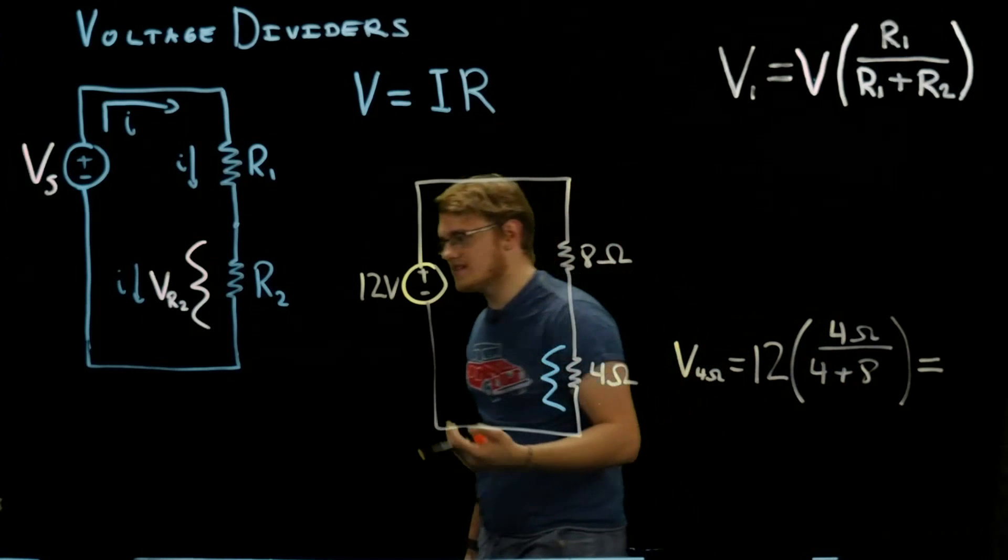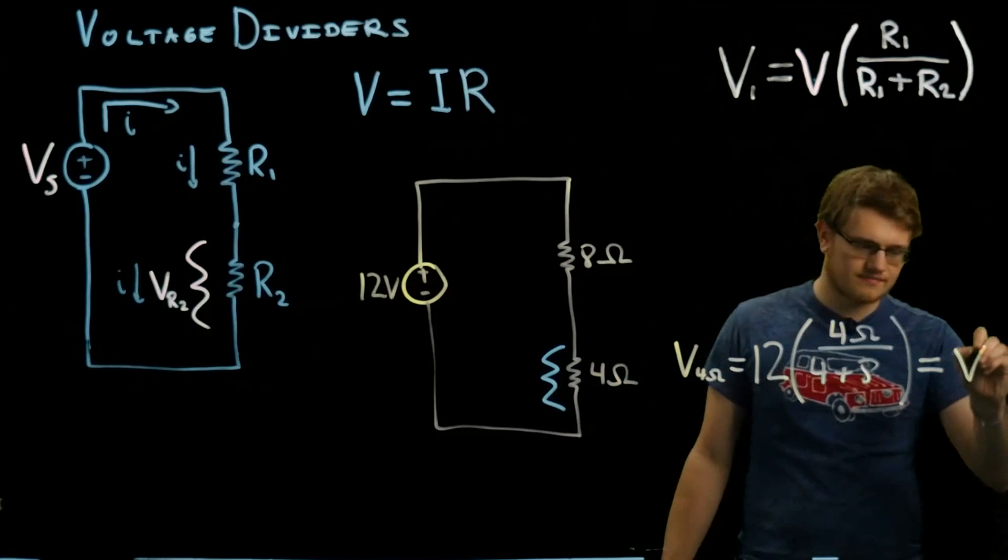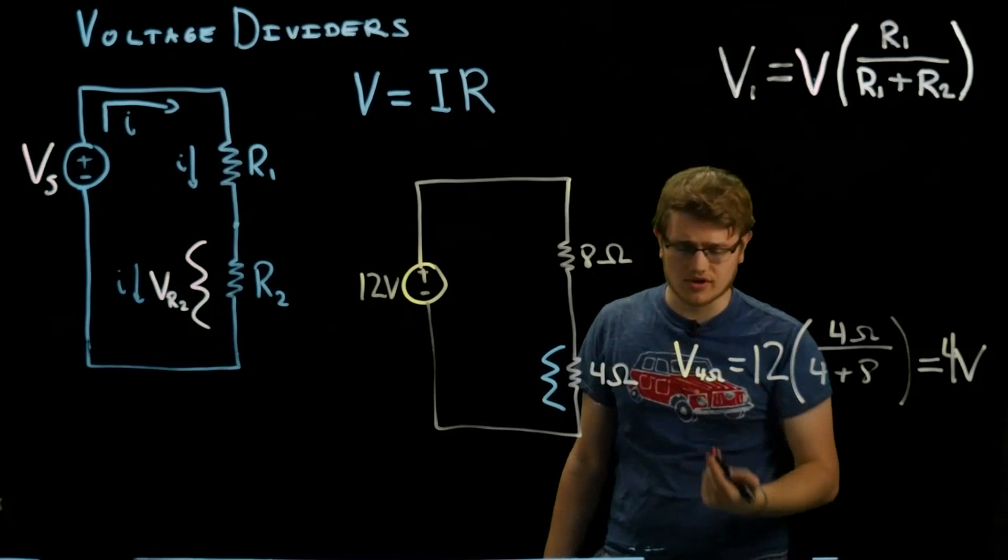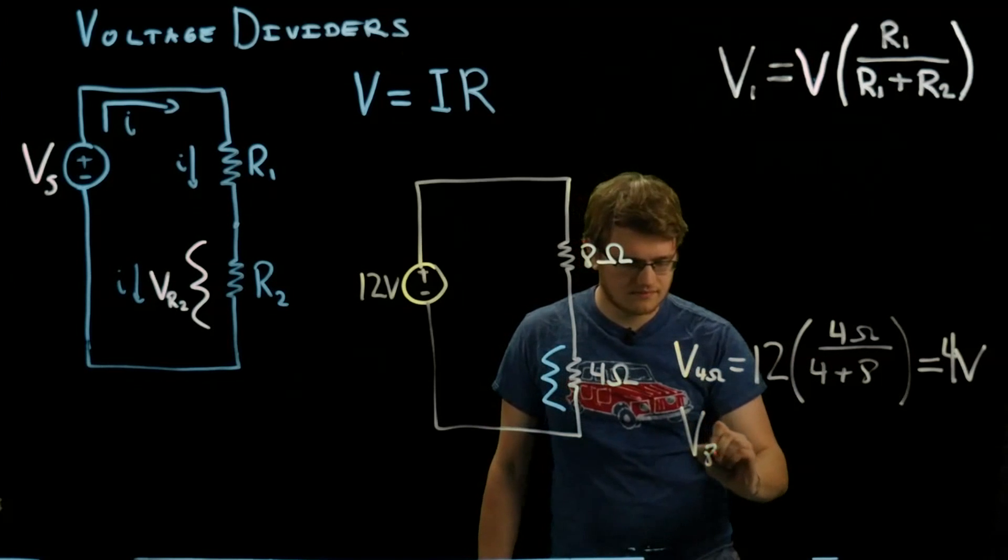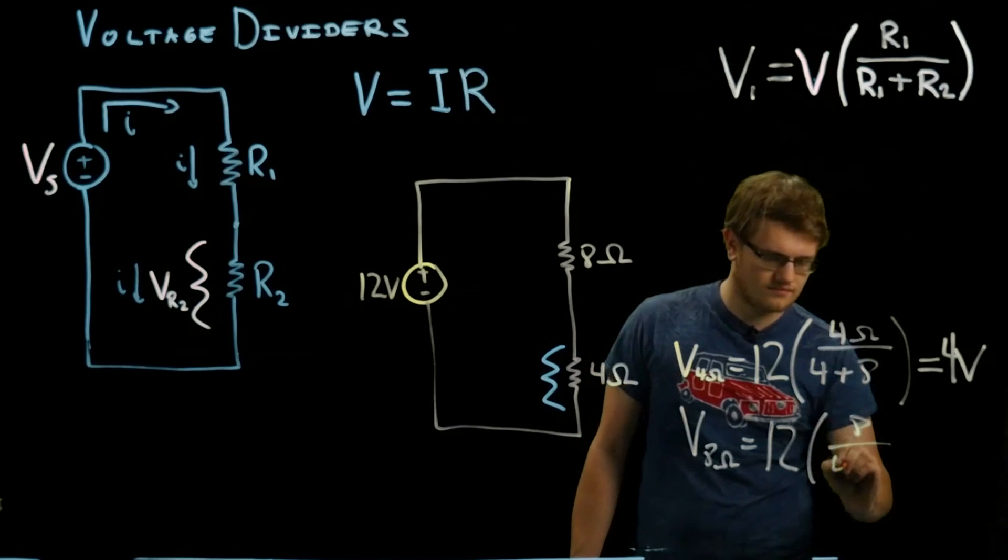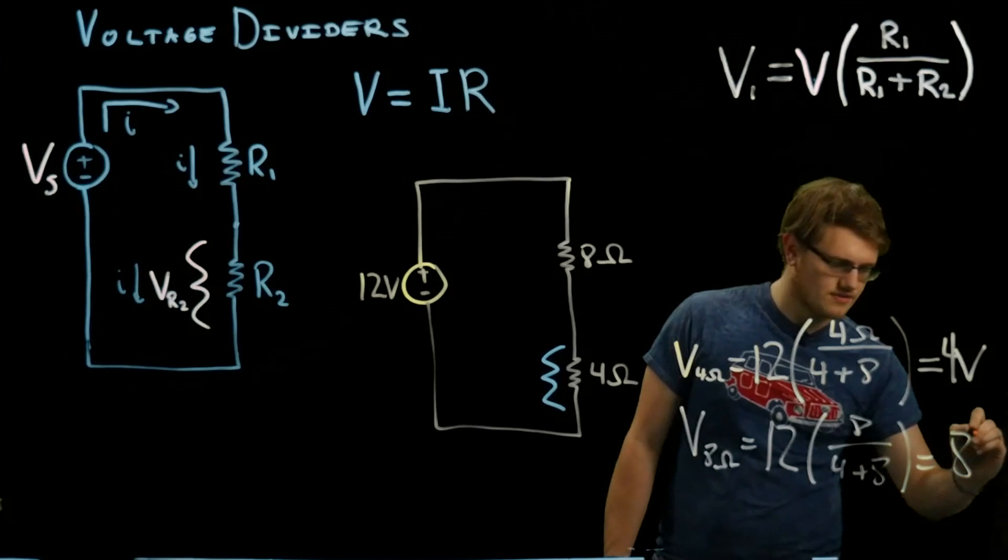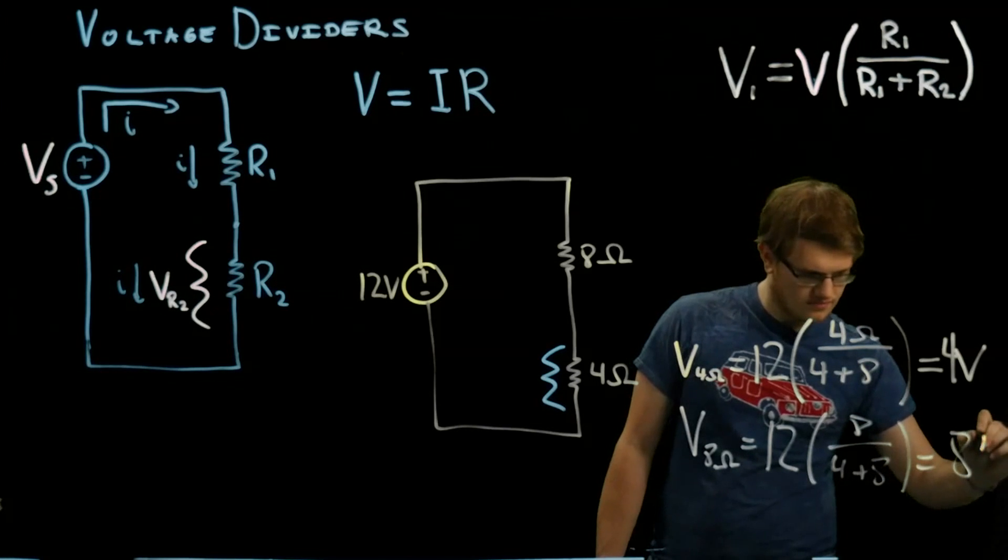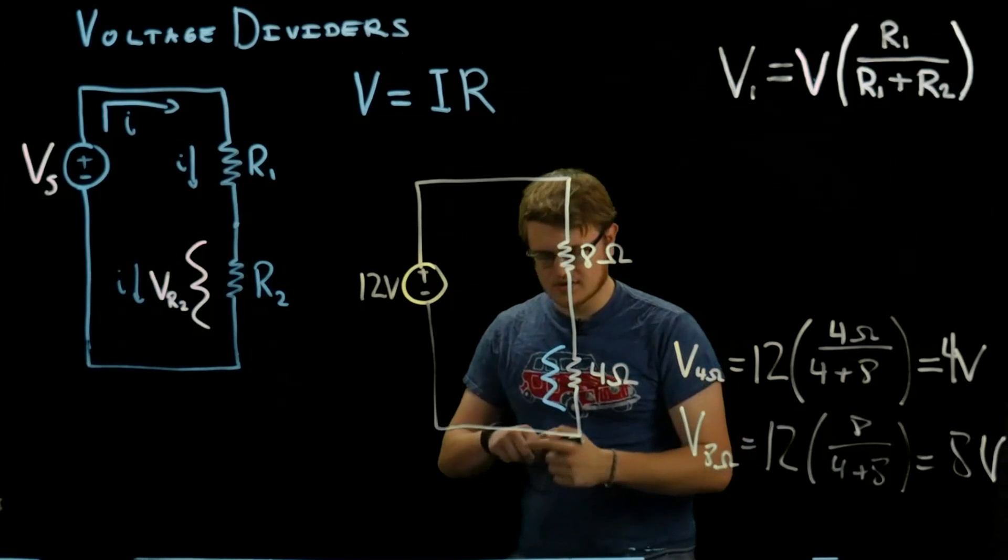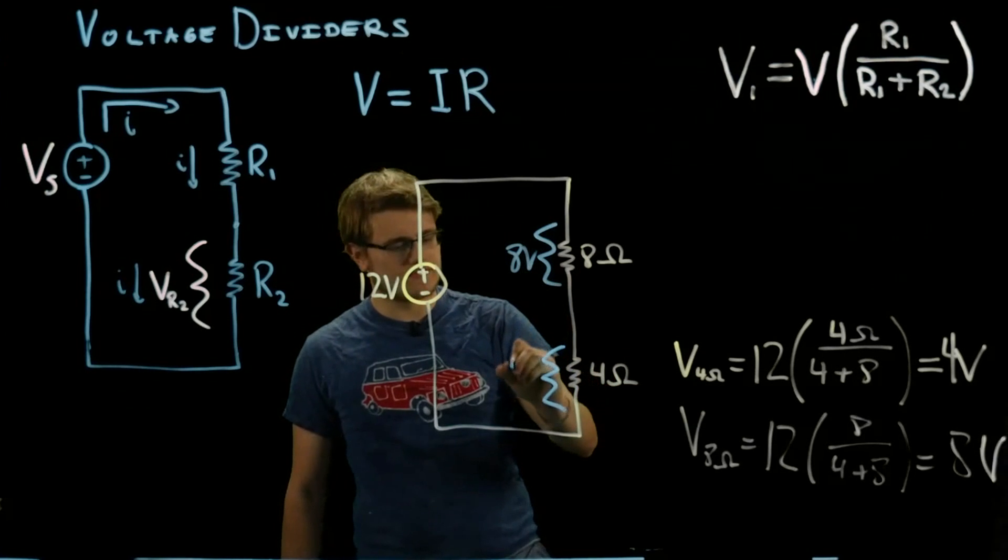That will give us 4 volts. That makes sense. We can do the same thing for this 8 ohm one, and it's going to give us 8 volts. The voltage going across this one is 8 volts, and that one is 4 volts.